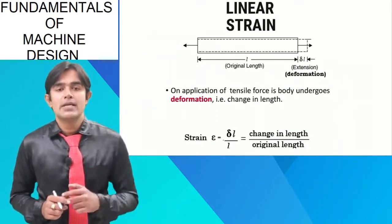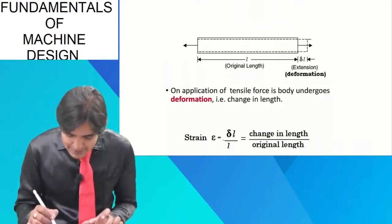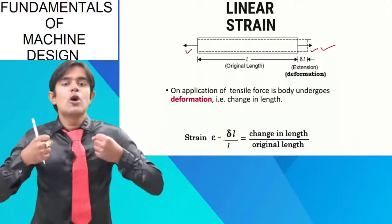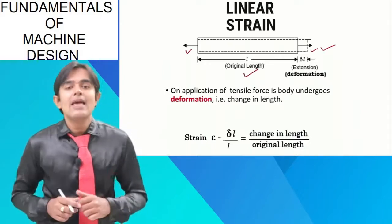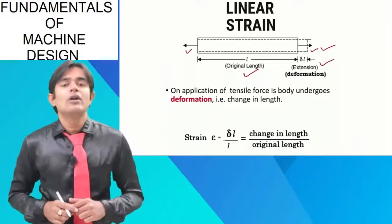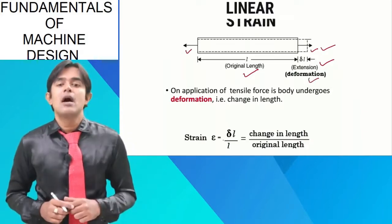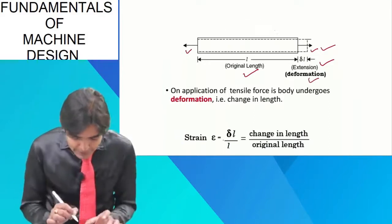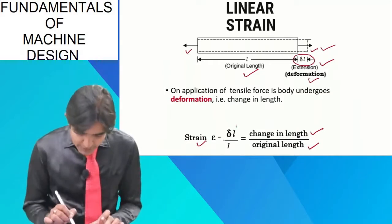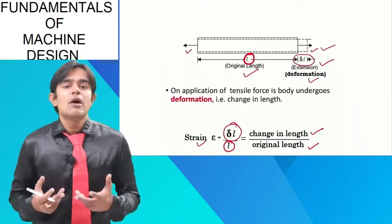The first type is linear strain — the word itself explains it. Linear means it acts in the longitudinal direction. As shown in the figure, two equal and opposite pull forces are applied on a body. The original dimension was L, and after application of force there is an increase in length called extension, denoted by delta L. Mathematically, linear strain is change in length divided by original length: delta L over L.